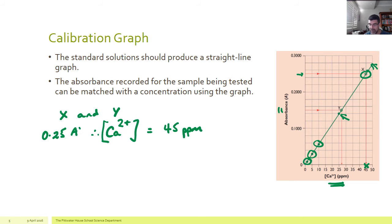Using the same strategy for y, we've got a value of around about 27. So for y, this is for x, for y, we have around about 27 parts per million. So a lower concentration of calcium ions in y, sample y, than there is in sample x.